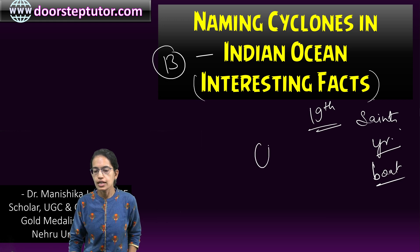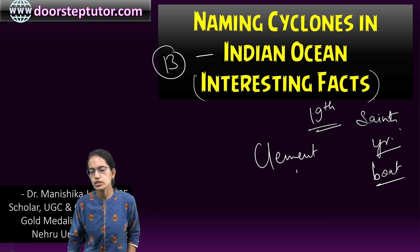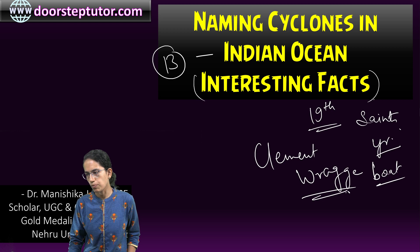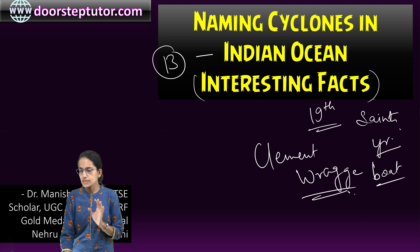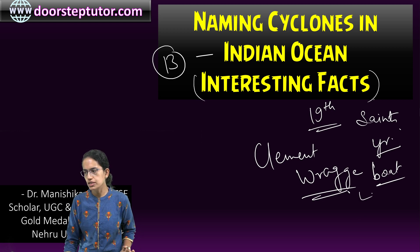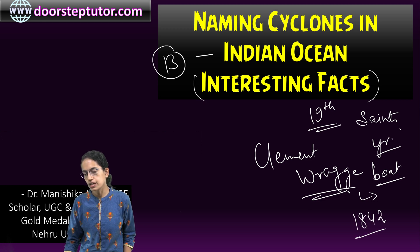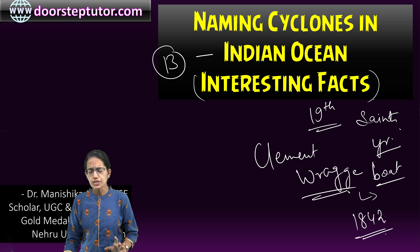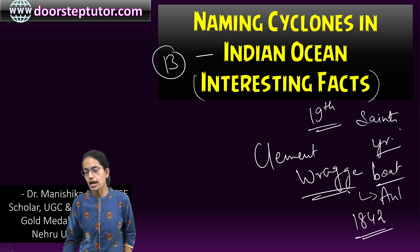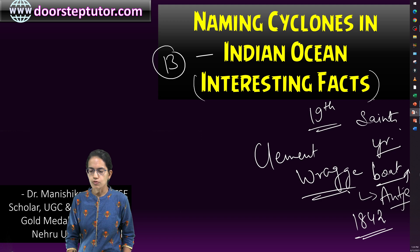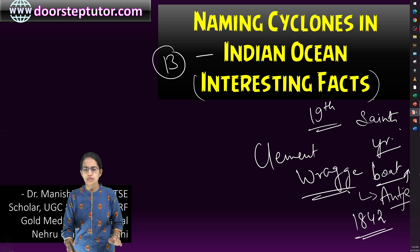However, Clement Walsh was the first to say that there should be a proper naming system. The naming at that time was arbitrary. For example, in the Atlantic in 1842, there was a cyclone known as Anche, and that name was based on the name of the boat which was in that region.